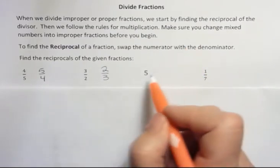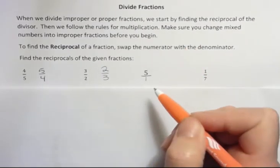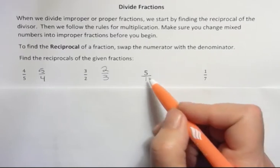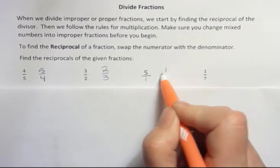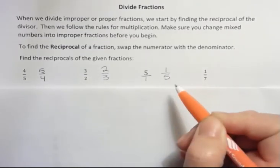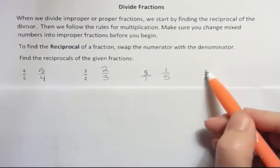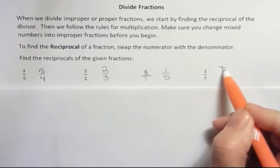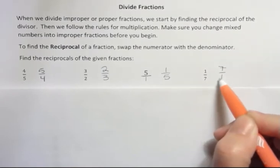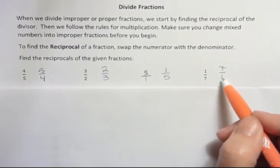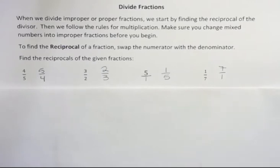What about 5? Well, we can always put a 1 under a whole number to make it a fraction, and then it's easier to see the reciprocal, which would be 1 over 5. And finally, 1 over 7, the reciprocal would be 7 over 1. We would do this if we were specifically looking for the reciprocal.